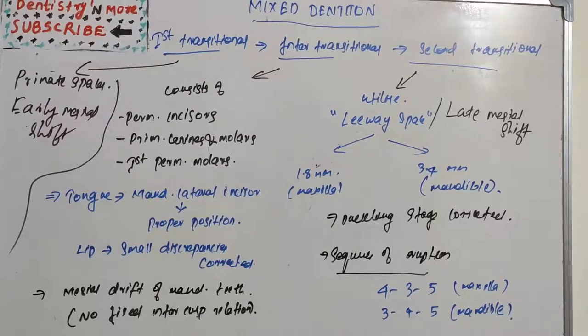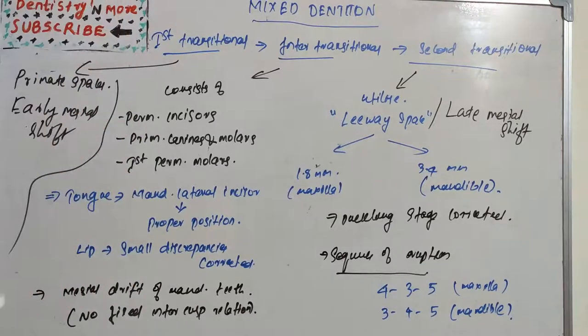Hello everyone, welcome back to another session in Dentistry and More. We are continuing with mixed dentition. We covered the first transitional phase, which was divided into first transitional, inter-transitional, and second transitional periods. The first transitional period is where the primate space was utilized by the molars and it was known as early mesial shift.